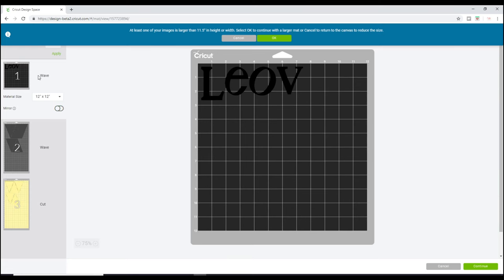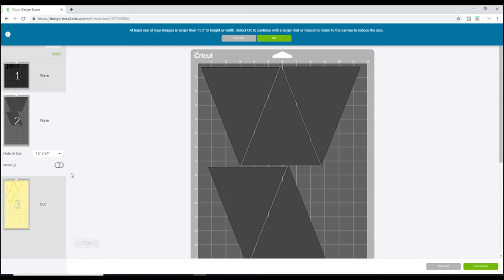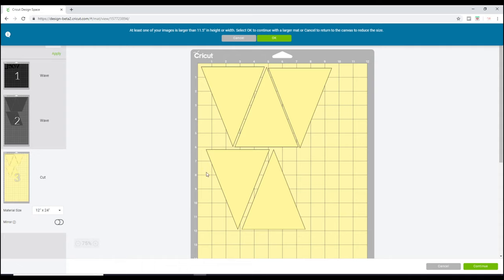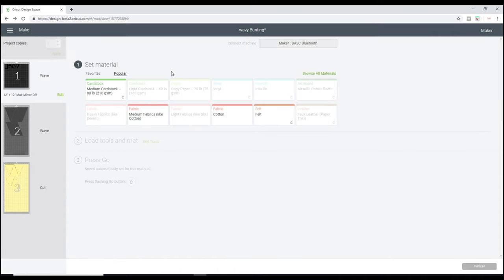I'm then just going to attach all of those together, and I'll do the same with the yellow. You'll see mat one is set as wave, we still need to mirror that because it's iron-on. Mat two is going to be cotton but it's set to wave, so we need to leave that as it is. And the third one is just a normal cut, so we can go to continue.